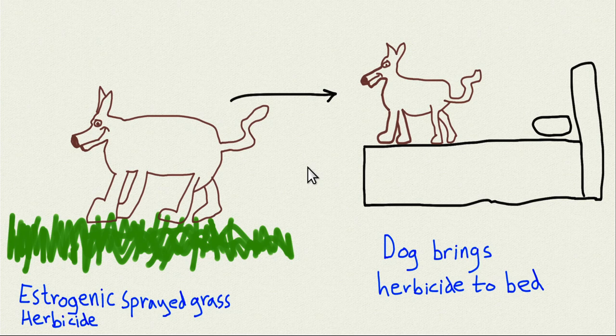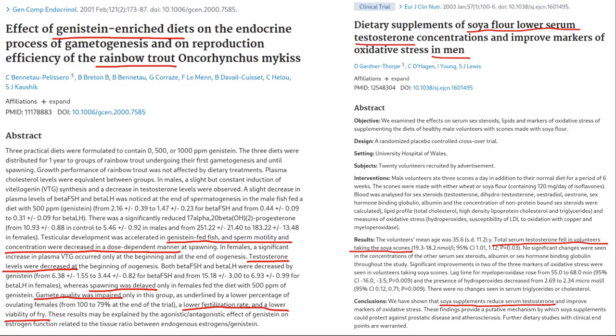Atrazine is sometimes sprayed on grass and lawns. People who have their dogs running around in treated grass and then sleep with the dog in their bed could be getting atrazine or other herbicides into their bed that way.